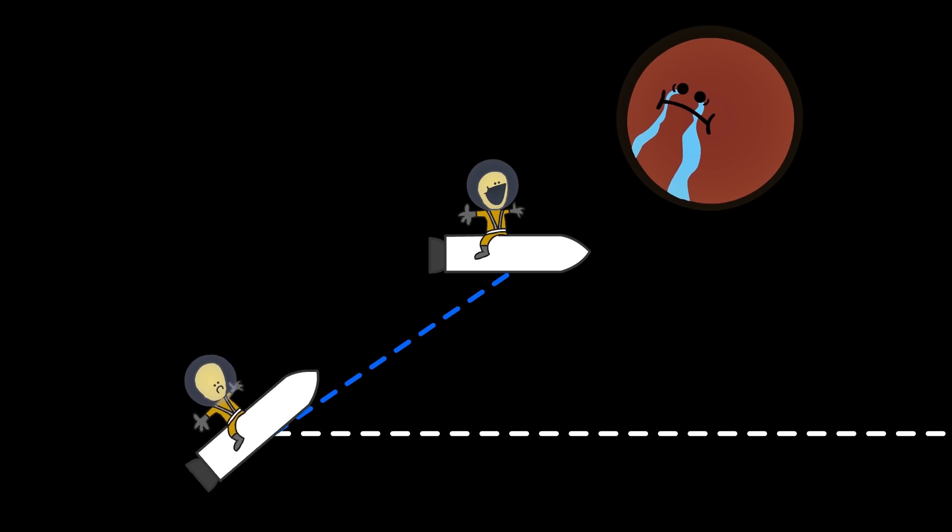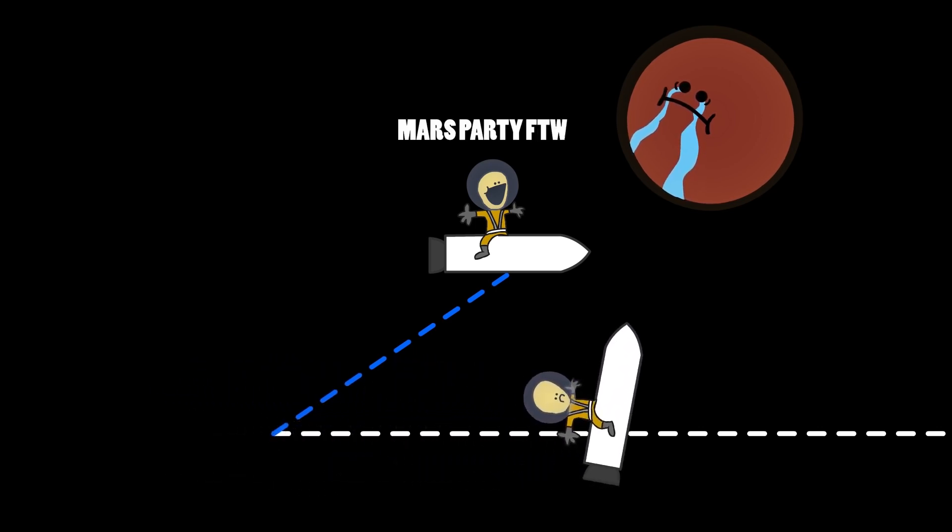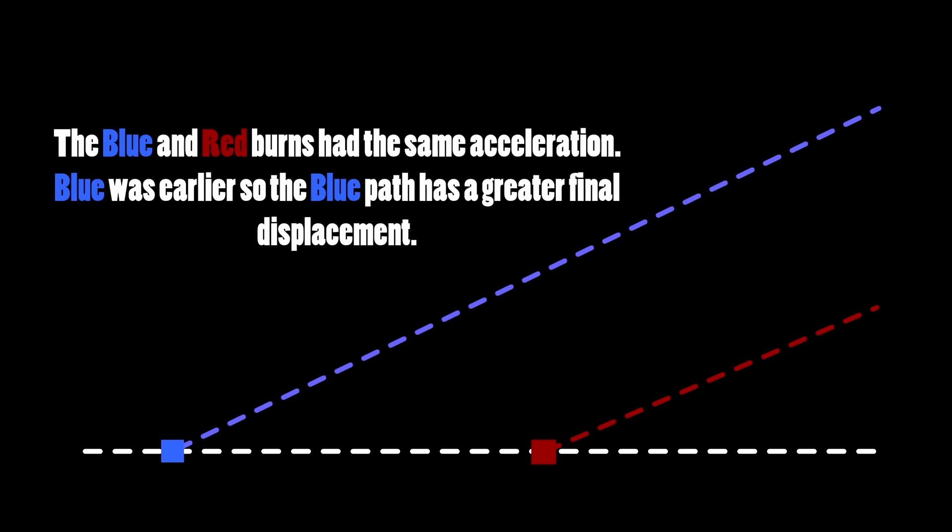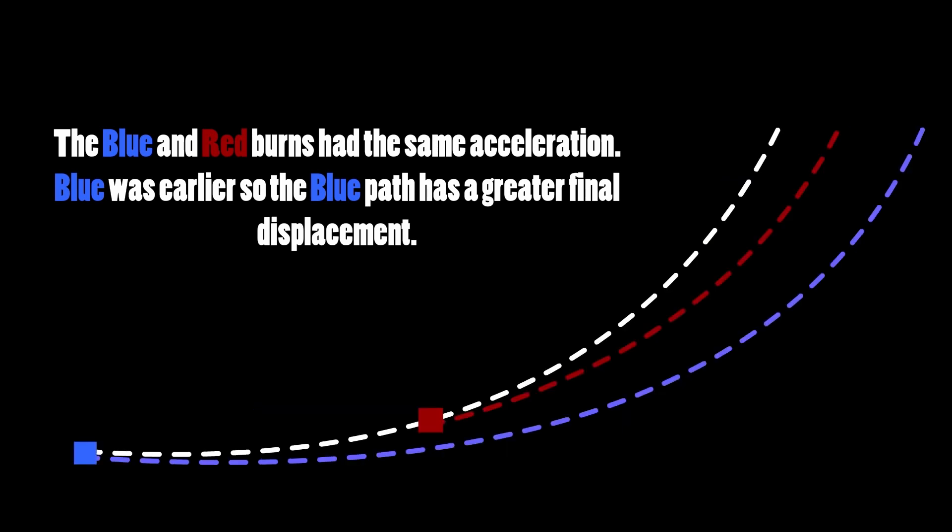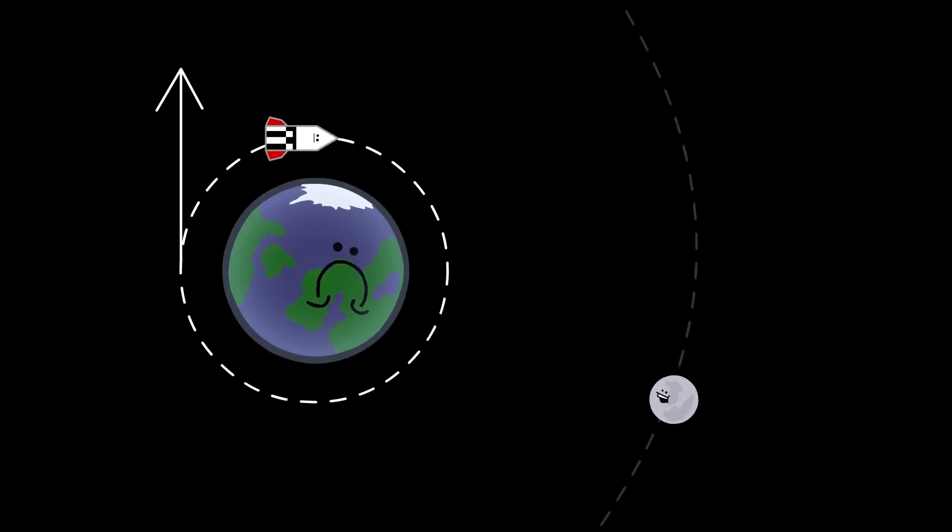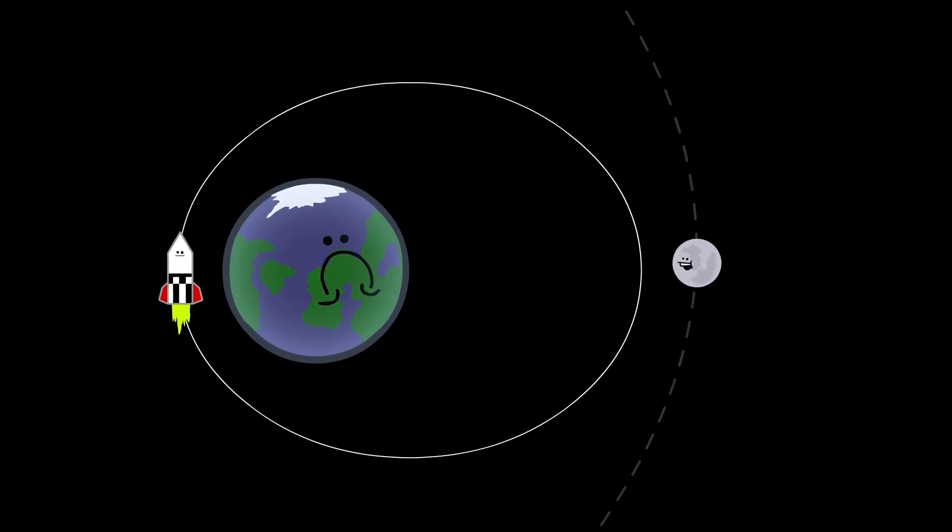or burn 100 days later for well over 10 seconds and still never get to Mars. This works on linear paths, so it has to work on curved paths. So, with this logic, if we burn here, we can get to the Moon with the least amount of fuel. Awesome, we can finally do it.